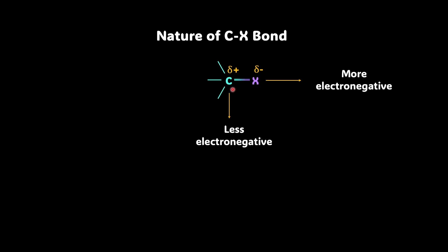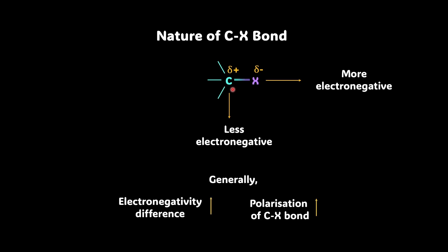That means there exists polarity in this bond. And generally, as the electronegativity difference increases — we know that fluorine is more electronegative than chlorine, and chlorine is more electronegative than bromine and then iodine — as the electronegativity difference between carbon and halogen increases, the polarization of the carbon-halogen bond will increase. Why is the knowledge of polarization of the C-X bond even important? Well, we'll soon find out.